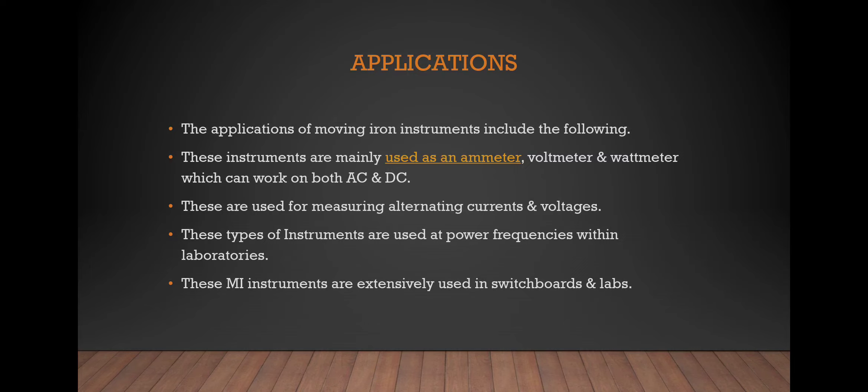Where we are using a moving iron instrument is: It is used as ammeter, voltmeter, and wattmeter. It is used for measuring alternating current and voltages. It is used at power frequencies within laboratories. It is used in switchboards and labs.